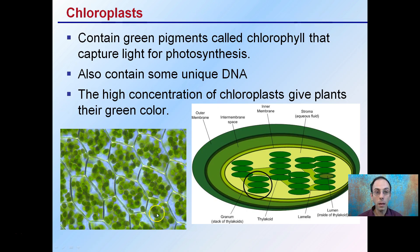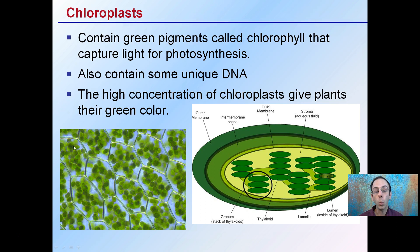Chloroplasts contain the green pigment called chlorophyll that captures light for photosynthesis. They also contain some of their own unique DNA. A high concentration of chloroplasts gives plants their green color. Here in New England in the fall, some trees lose their green color and turn different colors — that's a result of the breakdown of chlorophyll located in the chloroplasts. There are some other pigments, but chlorophyll is the most dominant.